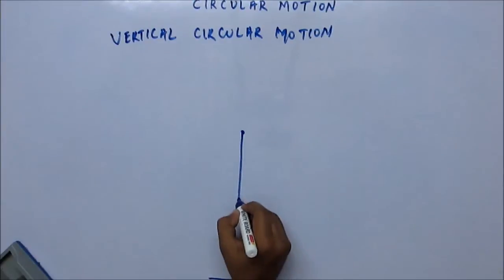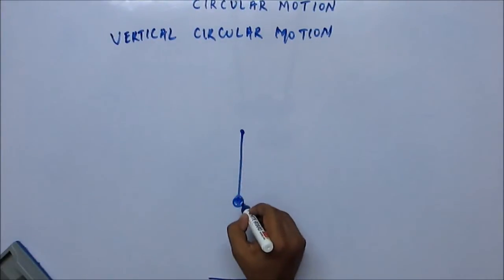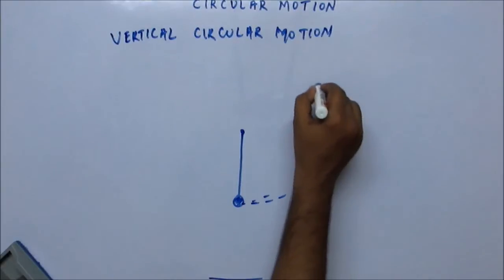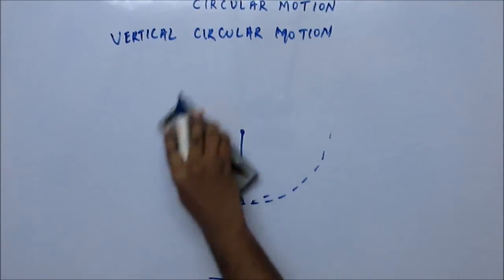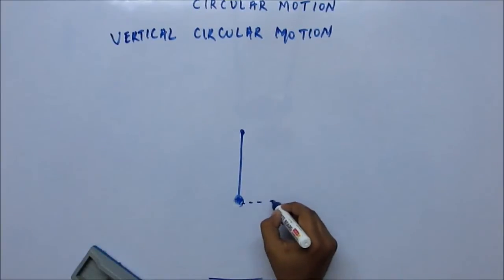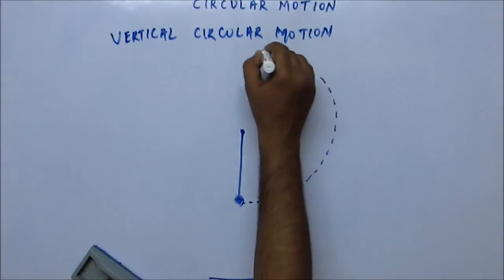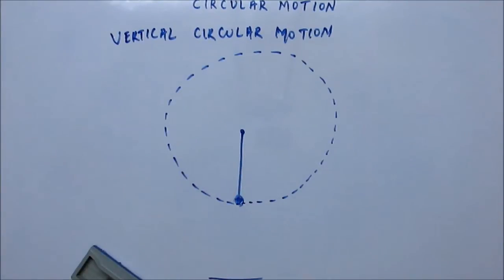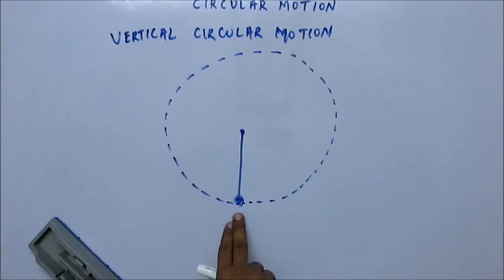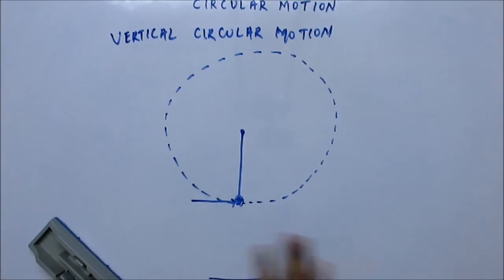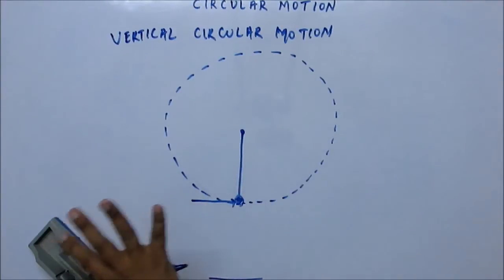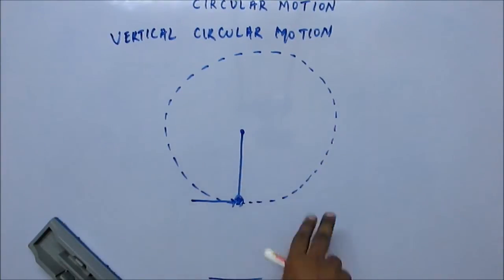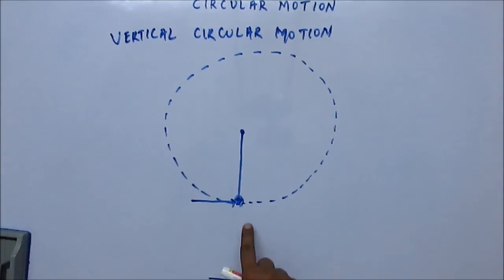Suppose there is a string with a bob attached, undergoing vertical circular motion. If we provide an impulse to the bob — hit it with a bat — the bob gains some velocity. Due to that velocity it moves up, and tied to the string it goes round and round in a circle. The first question is: will this circular motion be uniform or non-uniform circular motion?